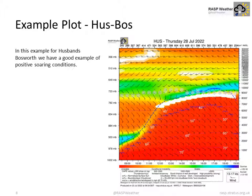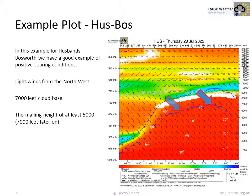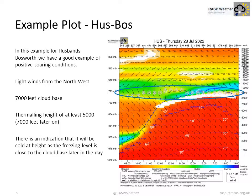Let's have a look at Husbands Bosworth. This example is a good day with positive soaring conditions: light winds from the north-west, 7,000-foot cloud base later, and a thermalling height of at least 5,000 feet. There is an indication it will be cold at height as the freezing level is close to the cloud base later in the day for pilots making it to that height.